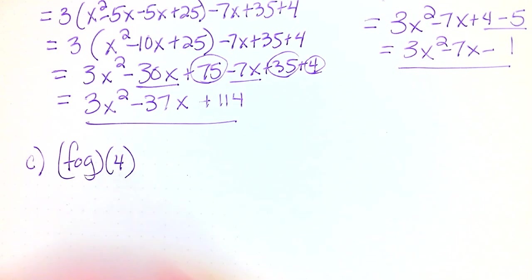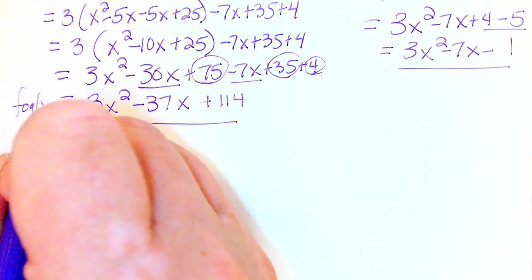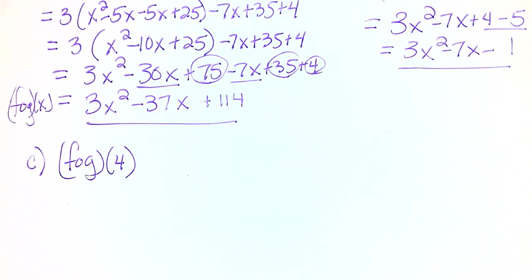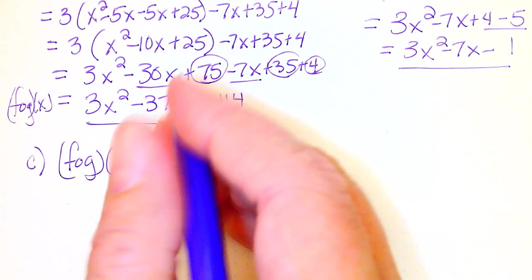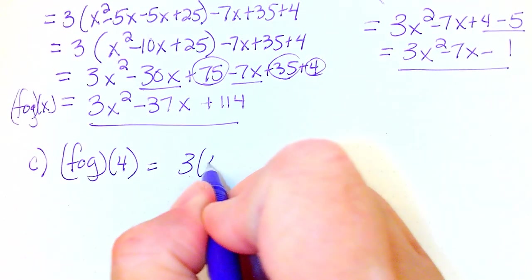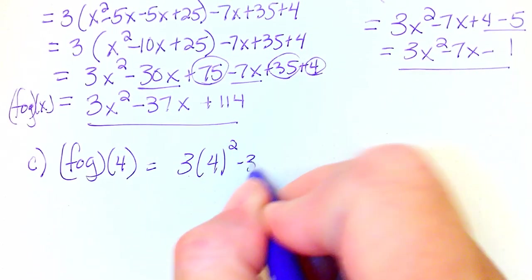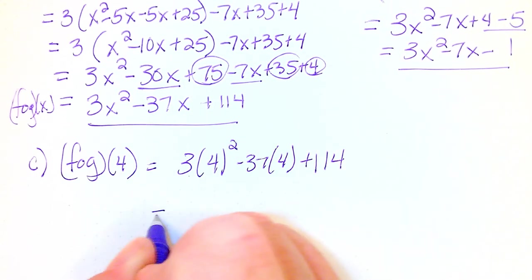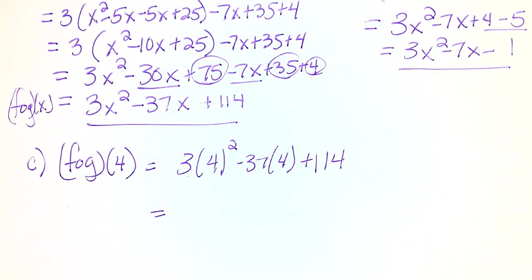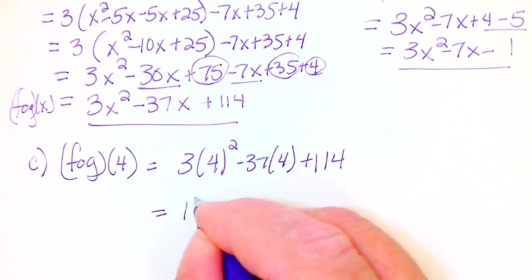Then this was f of g of x. All I have to do is take the 4 and plug it into the x values here. So this would be 3 times 4 squared minus 37 times 4 plus 114. And then we can figure that out real quick. So 3 times 4 squared minus 37 times 4 plus 114 gives me 14.